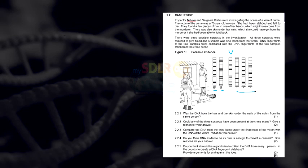The question asked: was the DNA from the hair and the skin under the nails of the victim from the same person? To understand this question and arrive at an answer, you need to look at the bars on these DNA profiles and try to match them. In answering the first question, was the DNA from the hair and the skin under the nails of the victim from the same person?